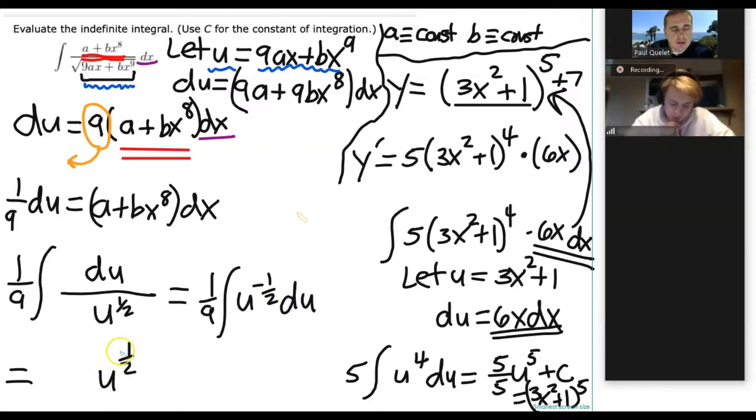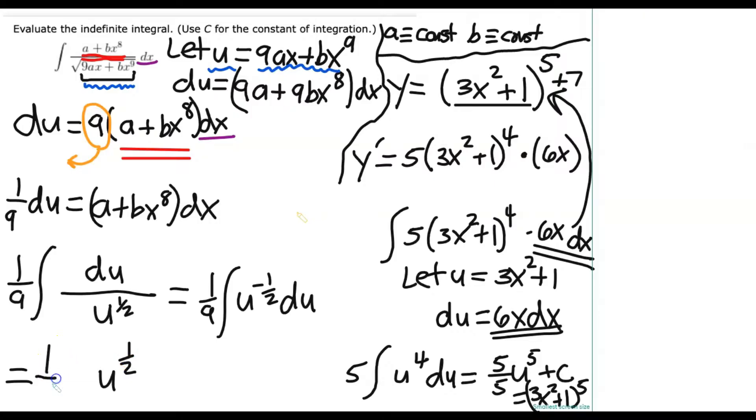So it would just be u to the one half of c? You're close. So we still need the one ninth out front. But then, remember, the rule with integrals is you go one power higher. But then you multiply by the reciprocal of the new power in front, which would be two over one. And then plus c.